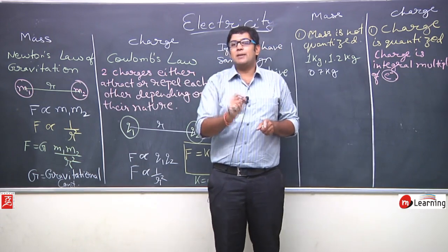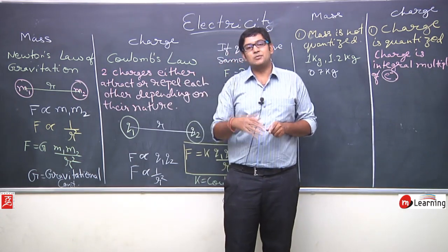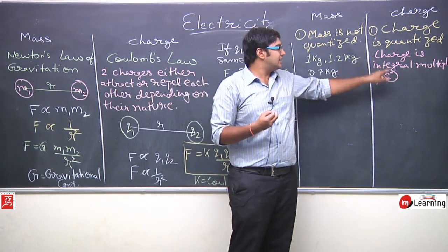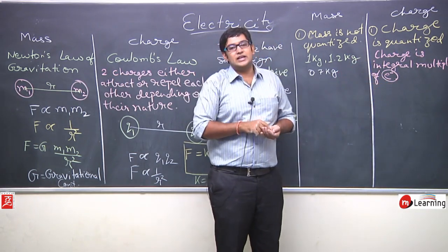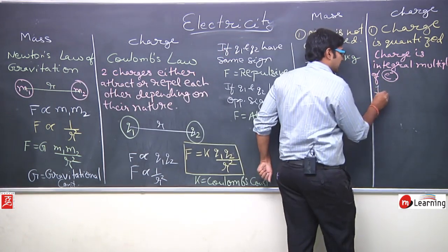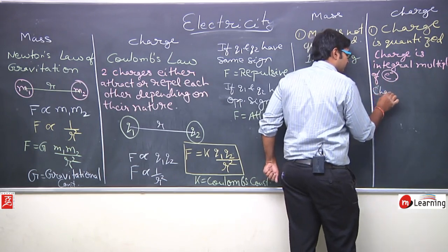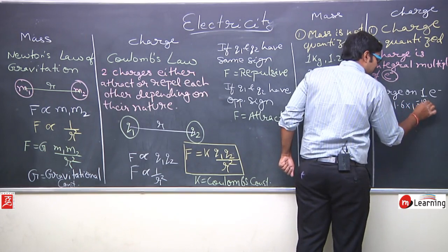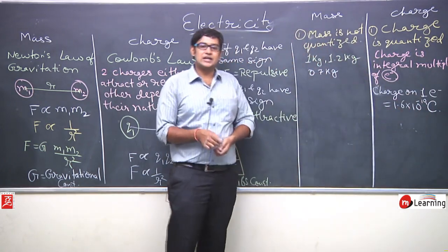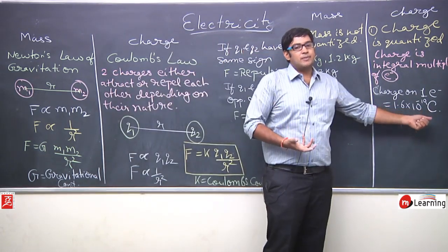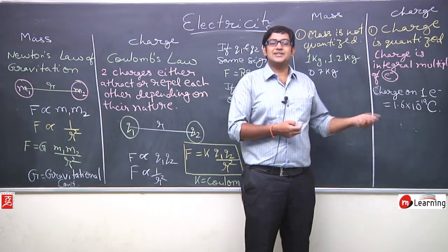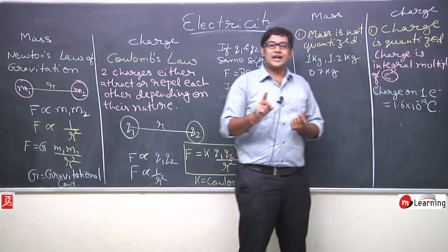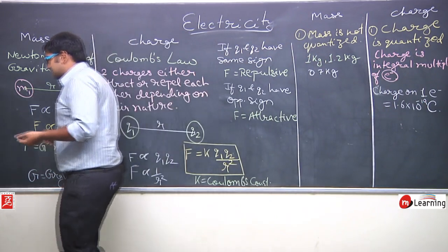Just as you buy apples in integer numbers, electrons are also transferred in integer numbers. So when charge transfers to a body, that charge is the integral multiple of one electron's charge. Scientifically it was proved that the charge on one electron is 1.6 × 10⁻¹⁹ coulombs.